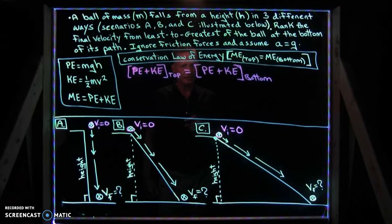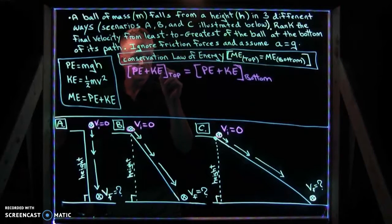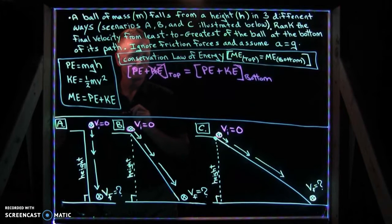Now, one key idea to understand is at the top of the path, the velocity is zero. So at the top, the kinetic energy is also zero.